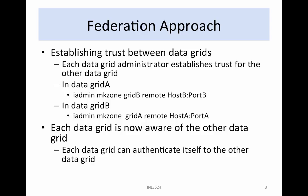In data grid A, the administrator executes iAdmin make zone grid B remote host B colon port B. This makes the location of data grid B known to data grid A. In data grid B, the administrator executes iAdmin make zone grid A remote host A colon port A. This makes the location of data grid A known to data grid B.